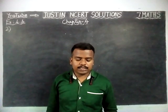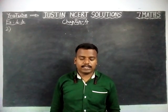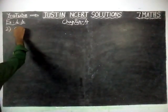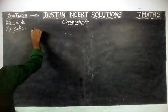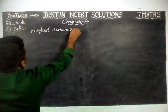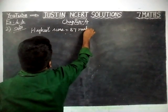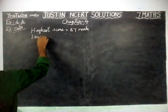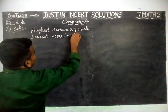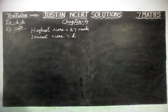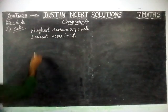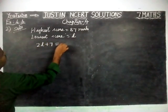The question is: the teacher tells the class that the highest marks obtained by a student in her class is twice the lowest mark plus 7. The highest score is 87. The highest score is equal to 87 marks, and we will take the lowest score as L marks. The condition is: 2L plus 7 is equal to 87. This is the equation.